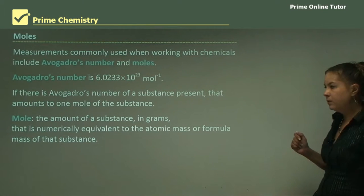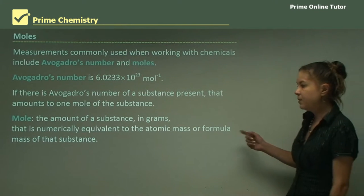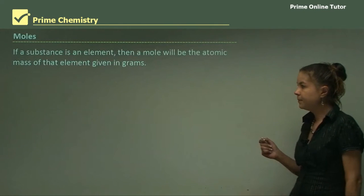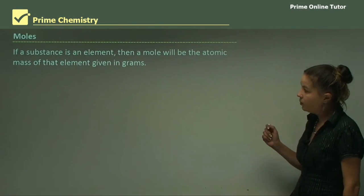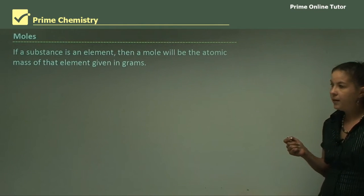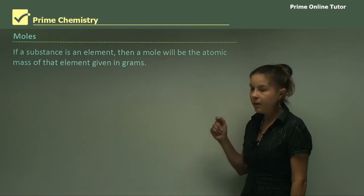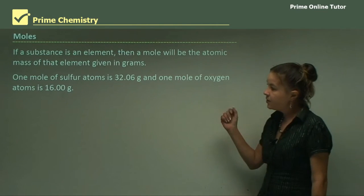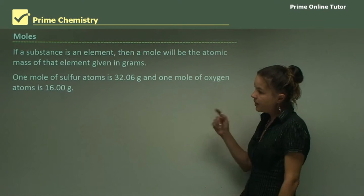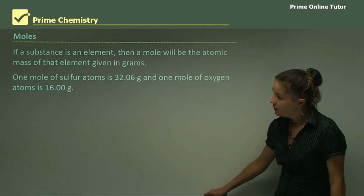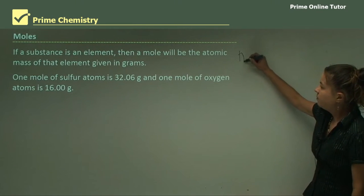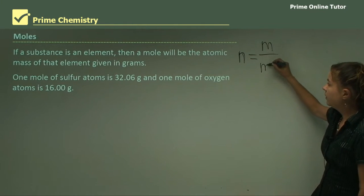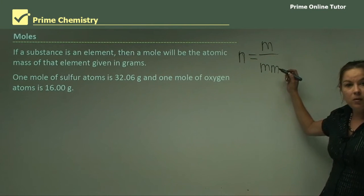So what's a mole? It's the amount of a substance in grams that is numerically equivalent to the atomic mass or formula mass of that substance. Now if a substance is an element, then one mole will be the atomic mass of that element given in grams. So that's what the numbers are on the periodic table. So one mole of sulfur atoms is 32.06 grams. So that's how moles relate to mass. And the equation for moles is n equals the mass in grams over the molar mass. So moles, mass and molar mass are all related.